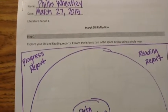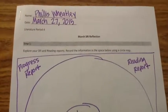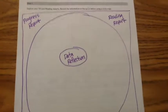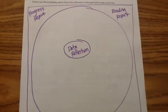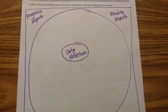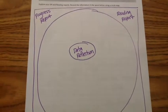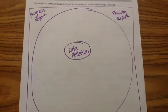The first thing that we're going to do for step one is we're going to explore our SRI and reading reports. We're going to use the circle map to record our information. So you can see that I've created my circle map. The topic of the circle map is data reflection. I've drawn the frame around my circle map and we're going to be using our progress report and our reading report. And these are going to be the information that gives us data to complete our circle map.